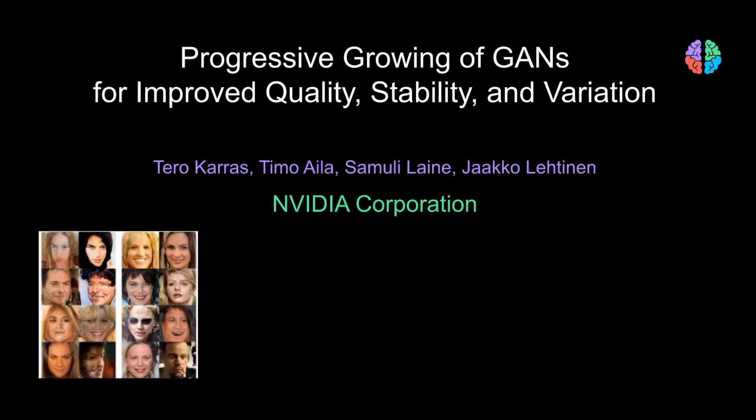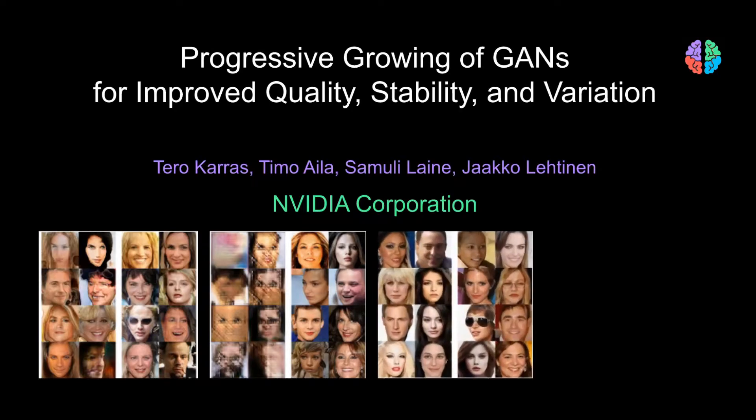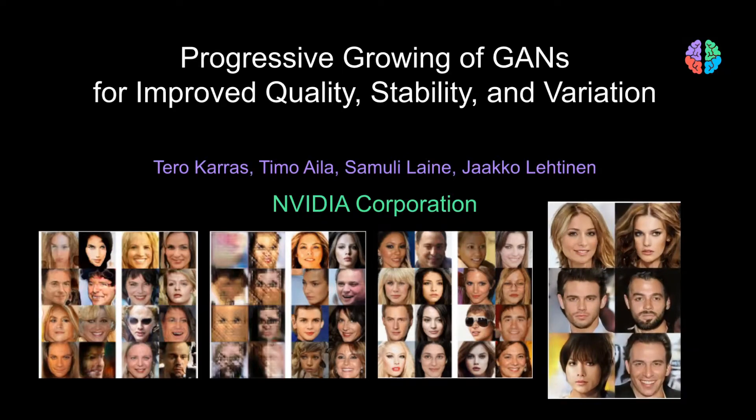Then why not teach neural networks to generate simple images before teaching them to generate high-resolution images? ProgressiveGAN was an ICLR 2018 paper that proposes just that. It shows a simple and effective way to train GANs. In addition, the paper proposes some important implementation details and improvements in terms of image quality, variation in generated images, and training stability. They also propose a new evaluation metric for GANs. Let's try to understand progressive GANs in this video.